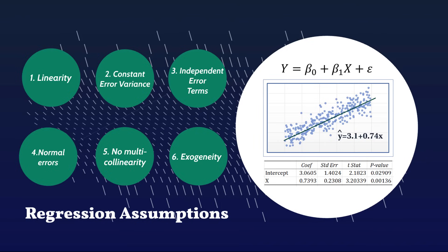Hi team, Justin Zeltzer here from zestatistics.com for the final video, the fifth in a series on regression. And this one's to do with the assumptions that underlie our regression. As you can see in the lineup here, we've got six different assumptions we're going to be dealing with in the video.